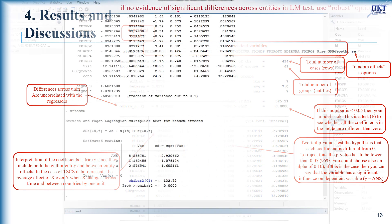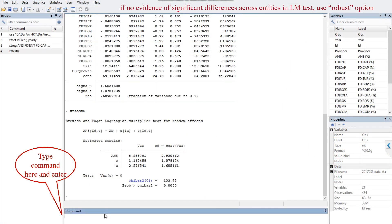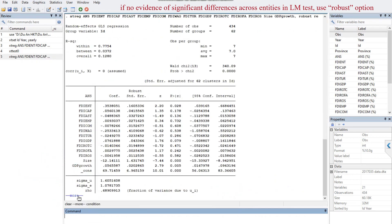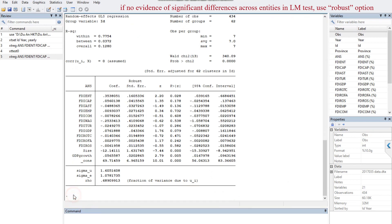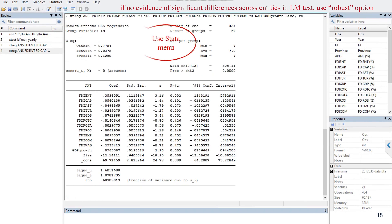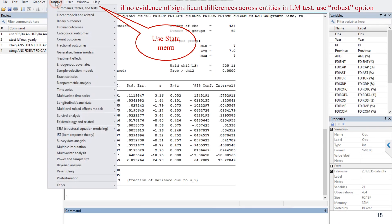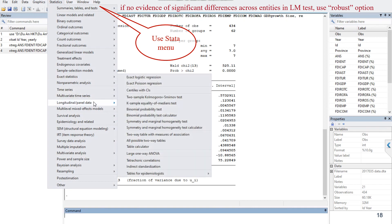If in the case there is no evidence of significant differences across entities, you should use the option robust to correct for this regression model by typing the xtreg with two options robust and re. Of course you can use Stata's menu by avoiding typing errors.